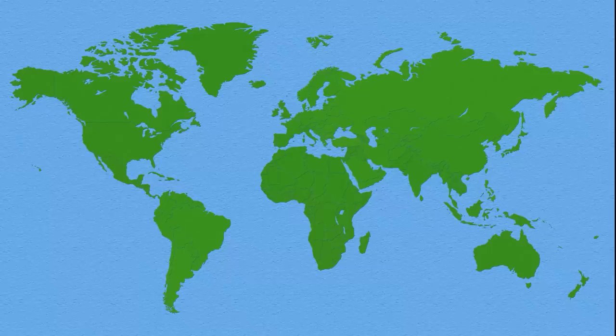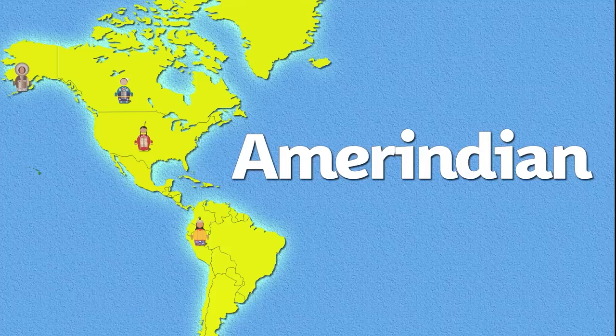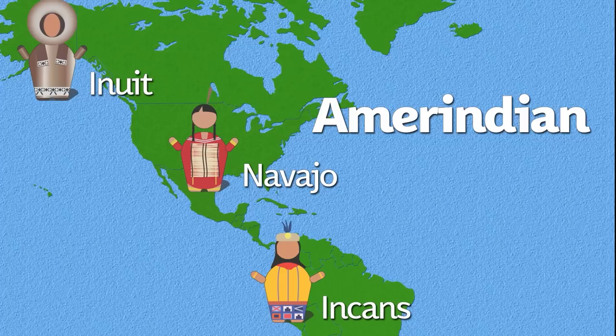The term indigenous people simply refers to anyone who lived somewhere before European colonization. There are indigenous people all over the world, including Scandinavia, Australia, the Pacific, and the Americas. Anthropologists refer to everyone from North and South America collectively as Amerindian — it's kind of an awkward term that you don't hear very often, mostly because of how vague and over-inclusive it is.